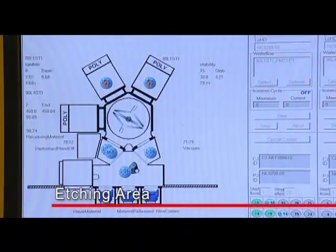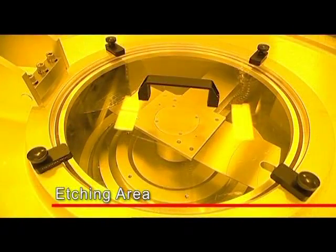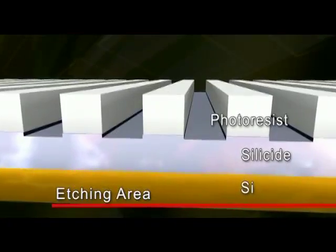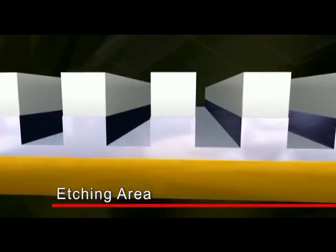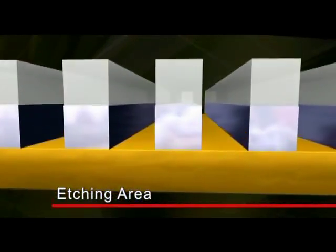After photolithography processing, the silicon wafer will be sent into the etching area to etch out the exposed regions, that is, the regions uncovered by the photoresist. The remaining pattern is the area needed for the circuits.